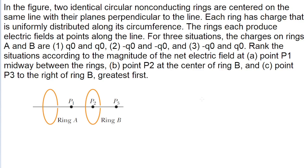This is a complicated problem where we have two rings of charge, each one setting up an electric field, and three points at which we're supposed to analyze the net electric field. The problem gives us three different scenarios for whether the rings are both positively charged, both negatively charged, or one positive and one negative, and we want to rank the magnitudes of the net electric fields at each of those three points.